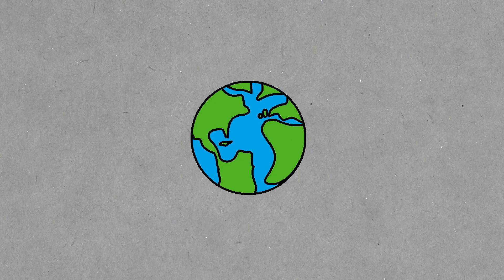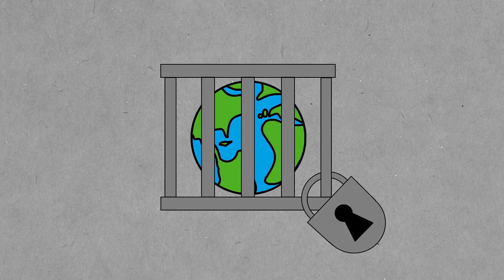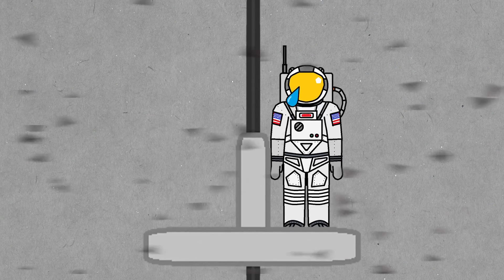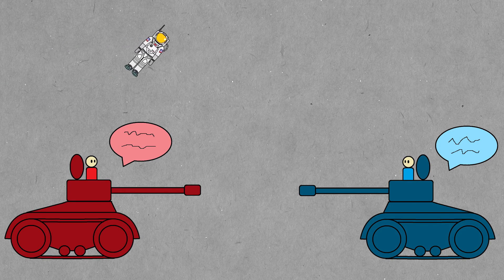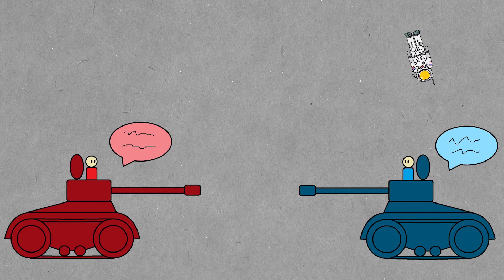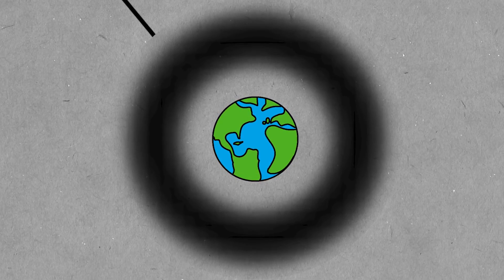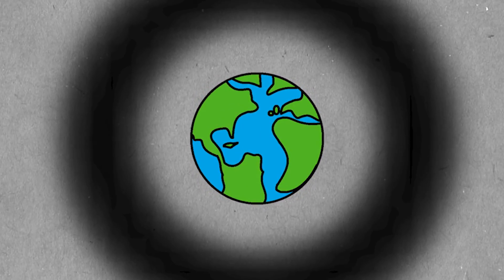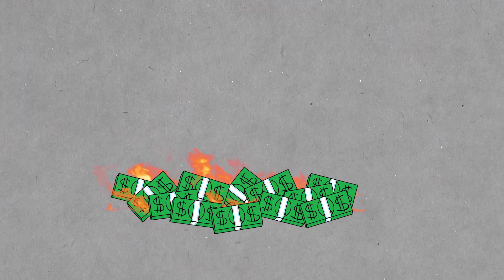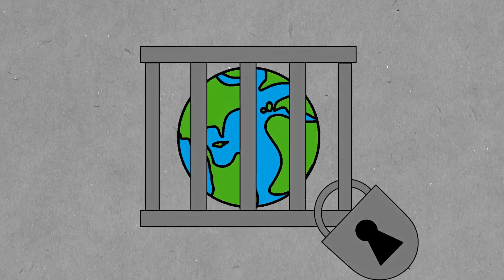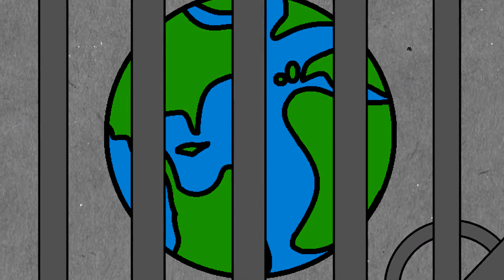This means that the Earth would effectively become a prison with only one way in or out, the space elevator. Other nations would not be able to launch their own spacecraft, or even build another space elevator. The cloud of debris would just make it too hard to lower another tether down to the surface. So basically, the best case scenario is that the elevator is destroyed, and it was all a huge waste of money. And the worst case scenario is that it survives long enough to effectively doom the human race to remain trapped on Earth forever.